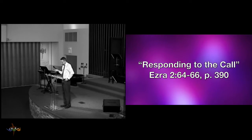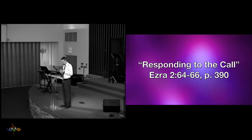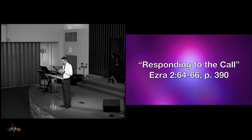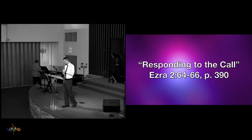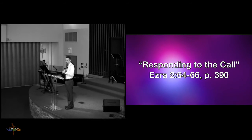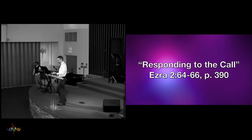Verse 64: The whole assembly together was 42,360, besides their male and female servants, of whom there were 7,337. And they had 200 male and female singers. Their horses were 736. Their mules were 245. Their camels were 435. And their donkeys were 6,720.